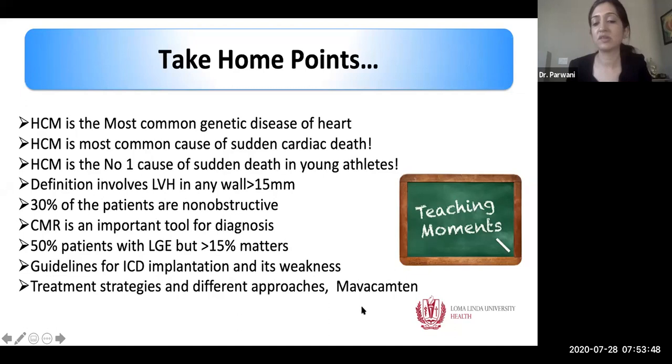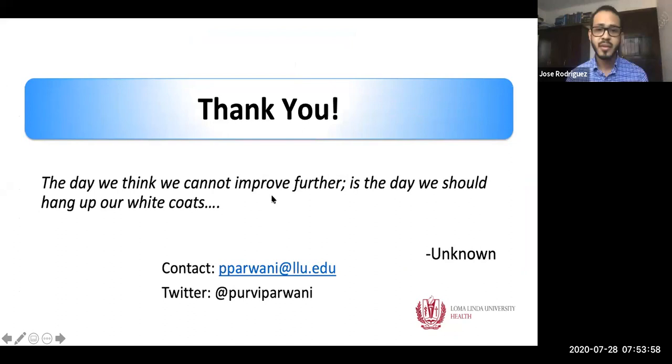Take-home points: HCM is the most common genetic disease of the heart and the most common cause of sudden cardiac death in young athletes. The definition involves LVH in any wall more than 15 mm. Thirty percent of patients are non-obstructive. CMR is an important diagnostic tool. Fifty percent of patients can have late gadolinium enhancement on cardiac MRI, but quantification of more than 15% LGE is what matters for prognosis. Know the guidelines for ICD implantation and remember all treatment strategies, including the new medicine on the horizon.